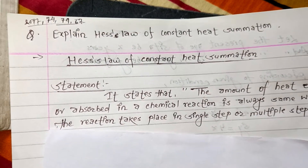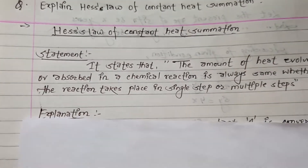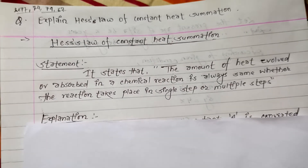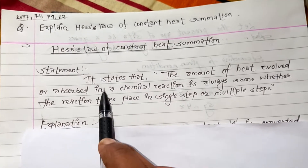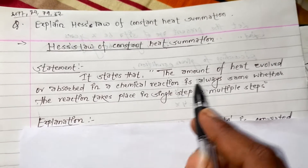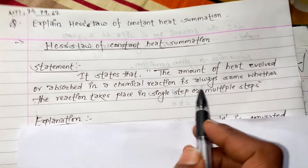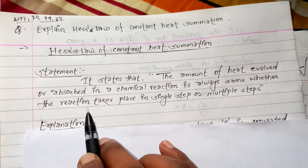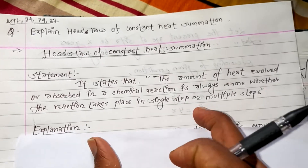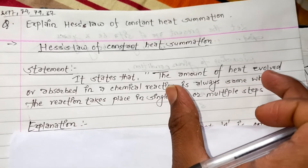Now let's explain Hess's Law of constant heat summation. The statement of this law is as follows. It states that the amount of heat evolved or absorbed in a chemical reaction is always the same, whether the reaction takes place in a single step or multiple steps.